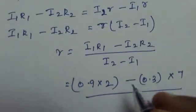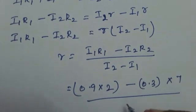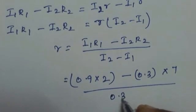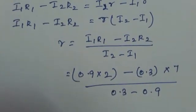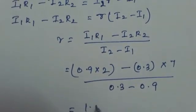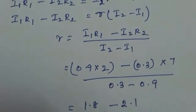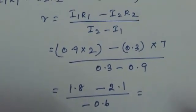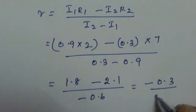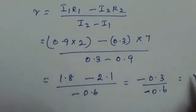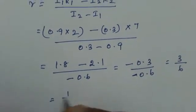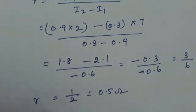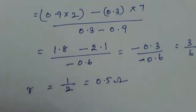So this is 1.8 minus 2.1 divided by minus 0.6. So what do we get here, minus 0.3 divided by minus 0.6 which is equal to 3 by 6 which is equal to 1 by 2 which is 0.5 ohm. So the internal resistance is calculated as 0.5 ohm.